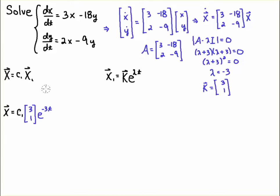So, you know that your solution is going to look something like this. It's going to look like X equals c1 times x1, where the vector x1 is the eigenvector times e to the eigenvalue times t. So, your solution starts to look like X equals c1, then the eigenvector 3, 1, e to the minus 3t, where minus 3 is the eigenvalue.